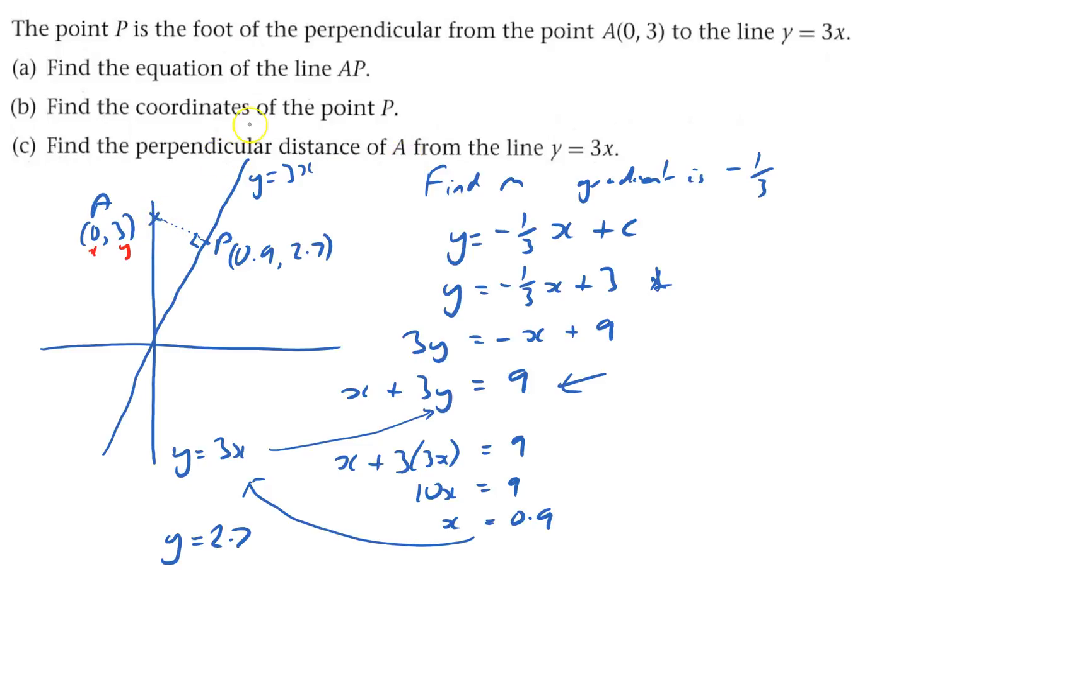Find the perpendicular distance. I want the distance. I'm doing green. You want this distance here. That is just going to be Pythagoras. This bit here goes from 0 across all the way across to 0.9. So that's 0.9.